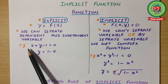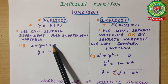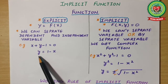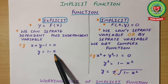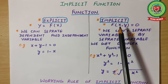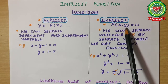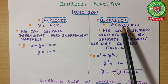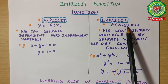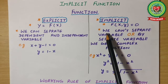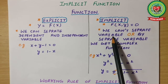For example, x + y - 1 = 0. If you shift the term, you will get y = 1 - x. But for implicit functions, x and y are related to each other in such a way that it is very difficult to separate x and y, and if we do separate them, we get very complex functions — we cannot separate the variables easily.